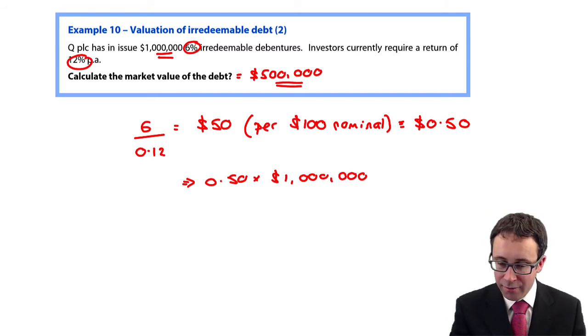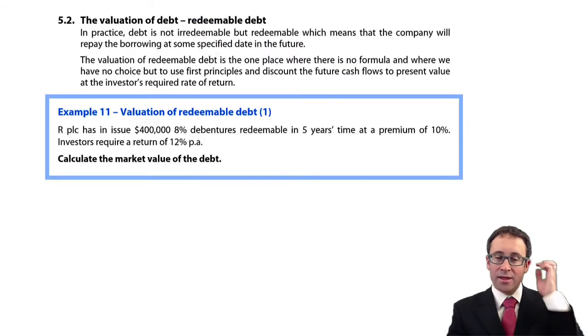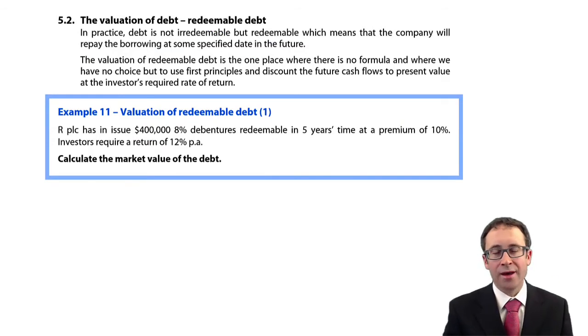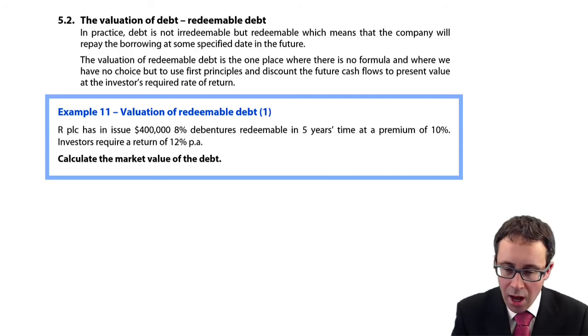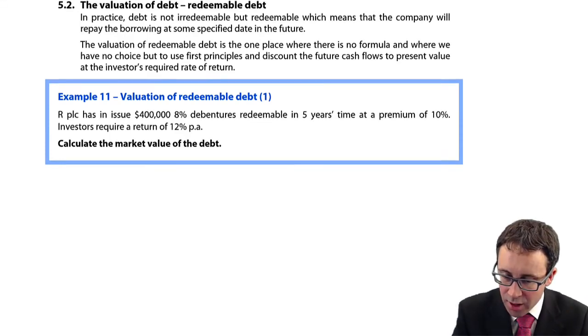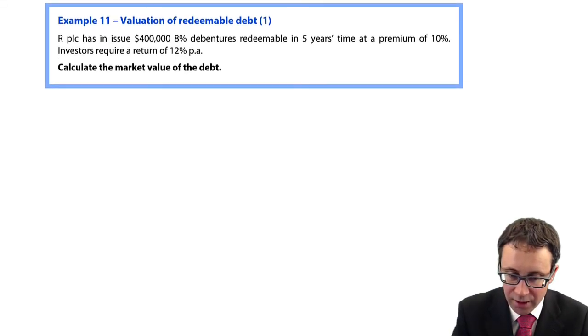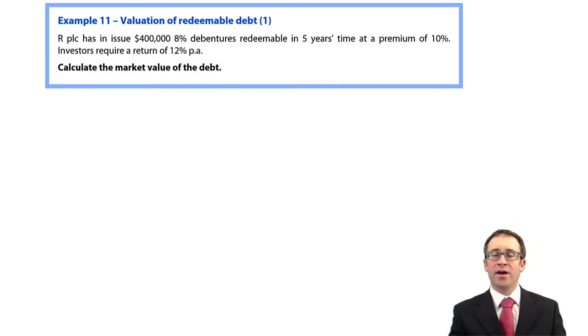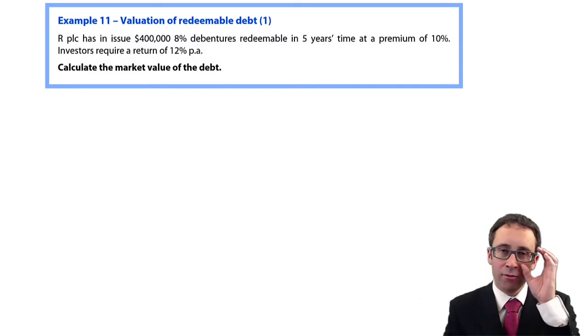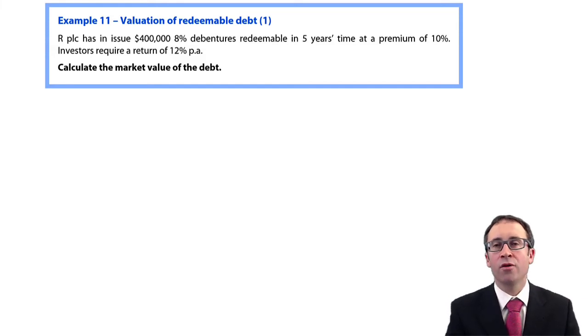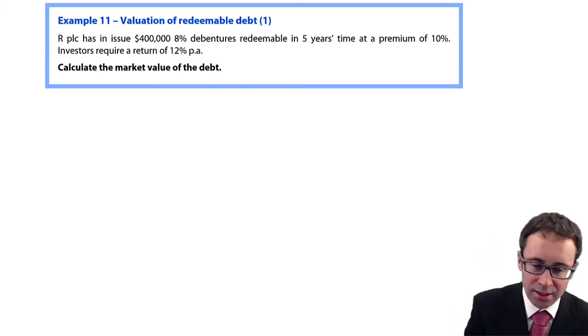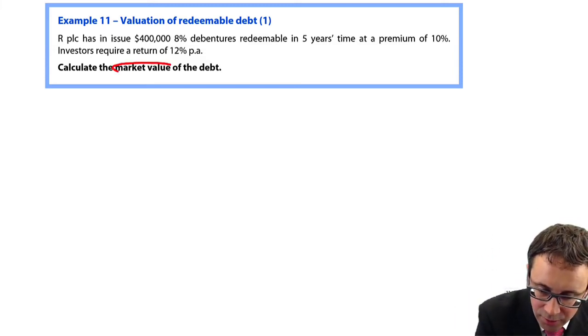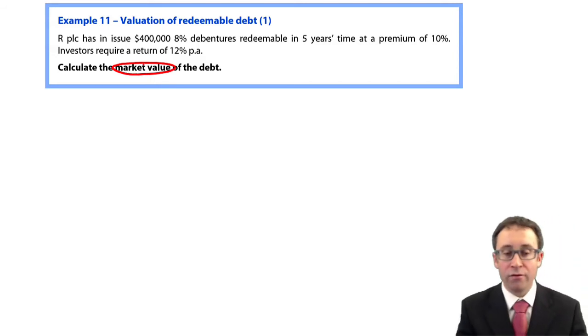If we go through and follow it up with redeemable debt, redeemable debt is ever so slightly more challenging. You can't just use your short-form formula taking the interest and dividing it by the required rate of return. You have to do it as a full present value calculation.